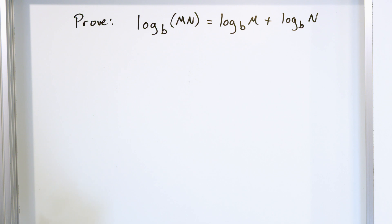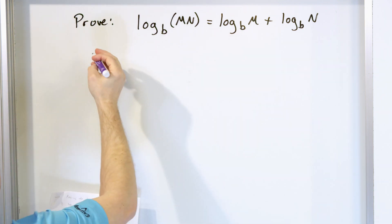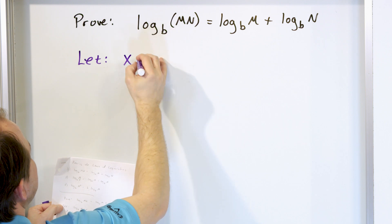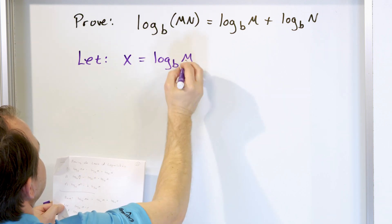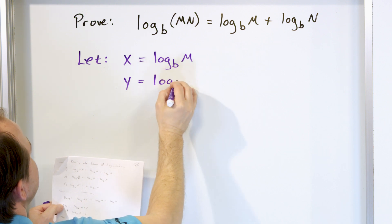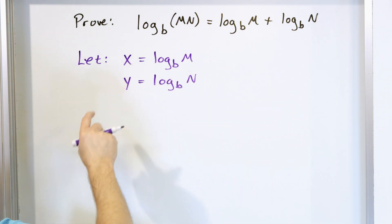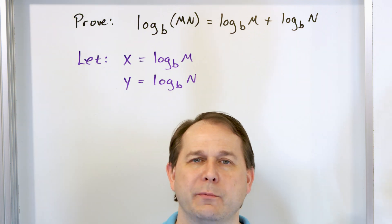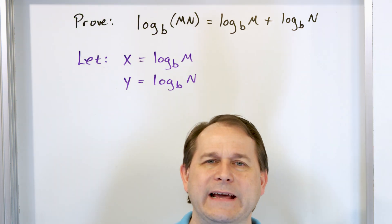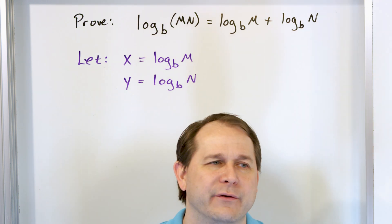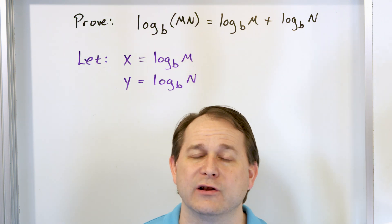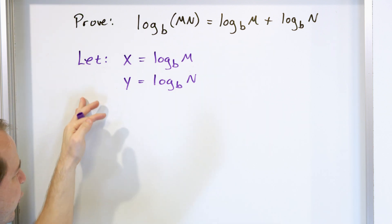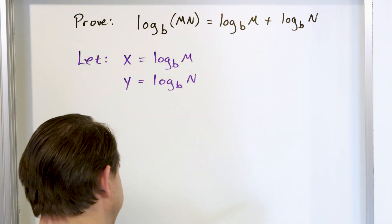In order to do this, let's let some new variables be true: let x equal log base b of m, and let y equal log base b of n. You might ask why I'm introducing new variables — that happens all the time in proofs. A proof is like a blank canvas; I can do whatever I want as long as it's mathematically legal. I'll logically connect the dots to make this true.